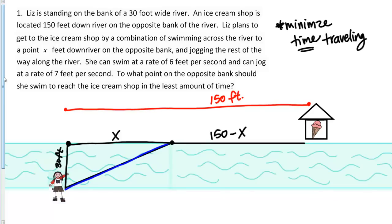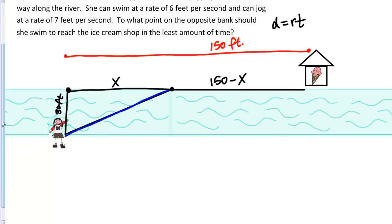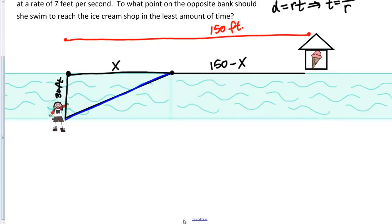How are we going to get that expression for time? We're given distances — 30 feet across the river, 150 feet to the ice cream shop, and X along the riverbank — and we're given rates: she swims at 6 feet per second and jogs at 7 feet per second. We have distances and rates and want to know about time. That suggests using the relationship: distance equals rate times time. If I solve for time, I get time equals distance over rate. That's the equation we'll be focusing on.